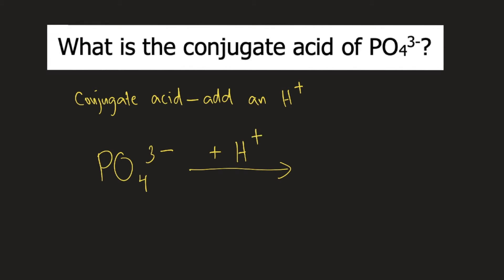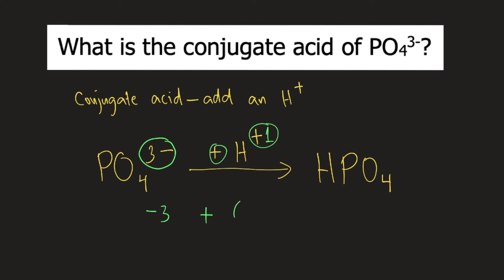When you add one hydrogen to PO4 3-, it becomes HPO4. Then you need to determine the charge of HPO4. The charge of PO4 3- is, of course, negative 3. Plus, the charge of H-plus is positive 1. So negative 3 plus positive 1 is equal to negative 2. So the charge of HPO4 is negative 2.